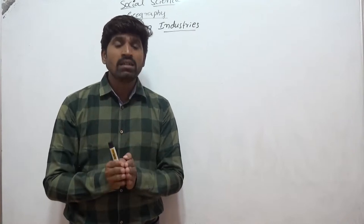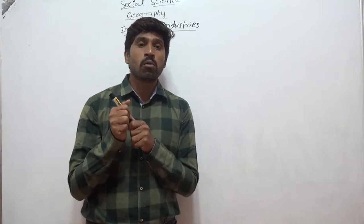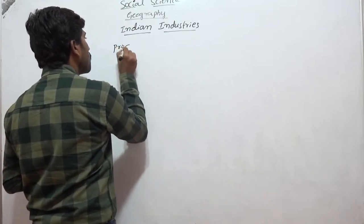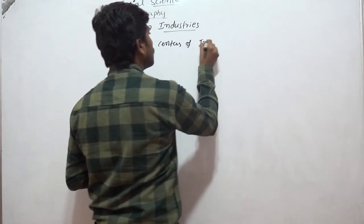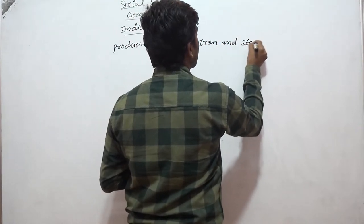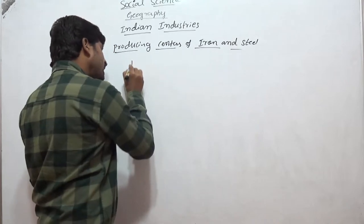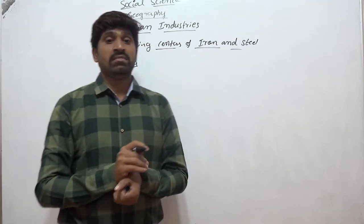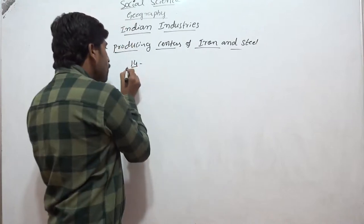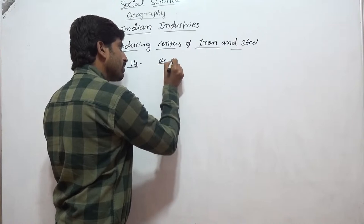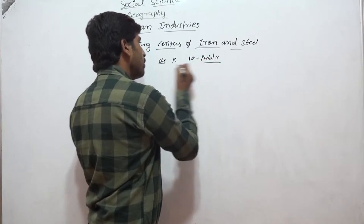This class I am going to explain about producing centers of iron and steel. In India there are 14 integrated iron and steel plants. Out of 14, four are private sector and the remaining ten are public sector industries.